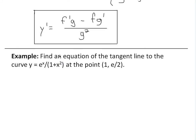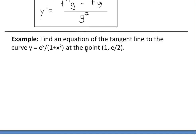So this is an example I'm going to go over. It states, find an equation of the tangent line to the curve y equals e^x divided by 1 plus x squared at the point x equals 1 and y equals e divided by 2, or at point (1, e/2). So basically, define the equation of a tangent line.